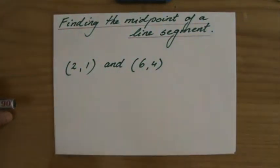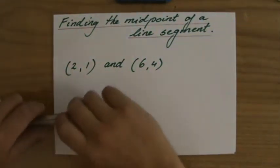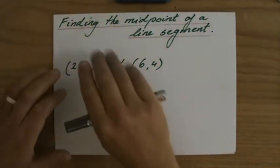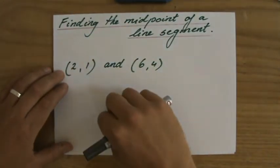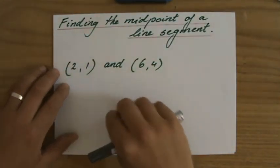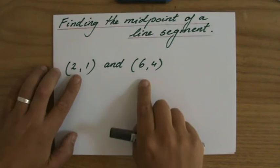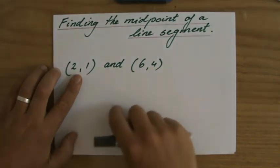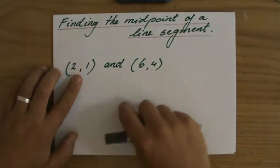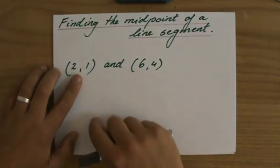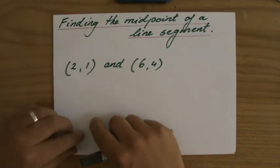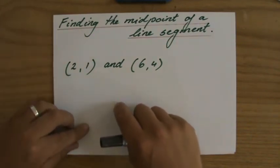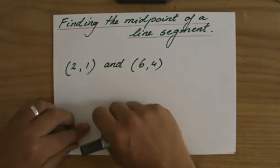Good morning, welcome back. They're asking me now to find the midpoint of a particular line segment. What does that mean? They give me two coordinates and the line segment connecting those two points. And then the question is, what is the coordinate of the point exactly in the middle of that line segment? What is the midpoint?